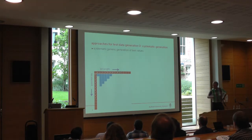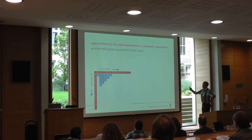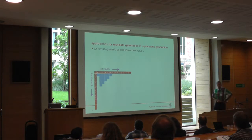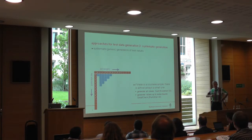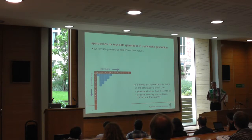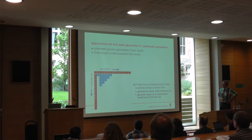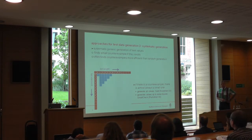The other approach is systematic generation — try from small to large each and every possible value and discover the counter-examples. If there's a counter-example, there's almost always a small one, and you discover those small ones. This is in the Claessen test system, and SmallCheck uses a similar approach. We find counter-examples, and often much more efficiently than in random testing.